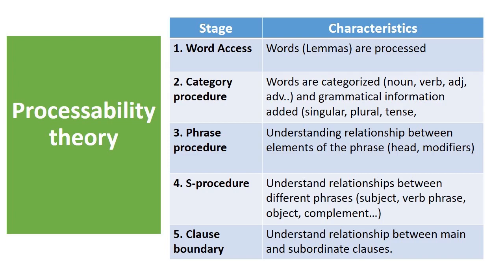In the fourth stage, learners understand the relationship between different phrases within a sentence. They can, for instance, differentiate between a noun phrase that represents the subject and a noun phrase that represents the object, and make a distinction between an adverbial phrase, an adverb phrase, and a noun phrase. In the last stage, learners understand the relationship between main clauses and subordinate clauses in complex sentences.